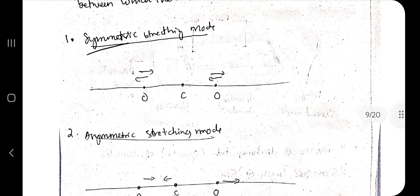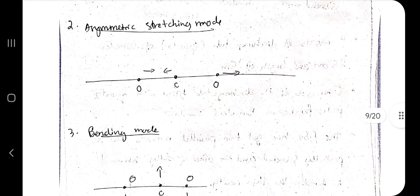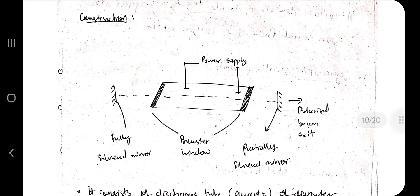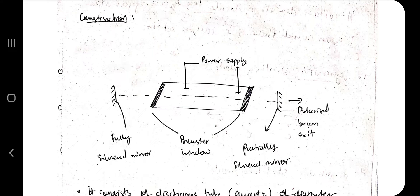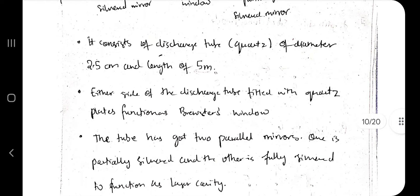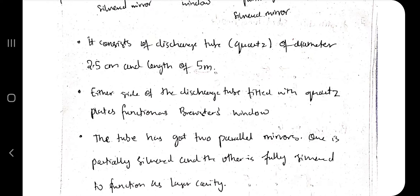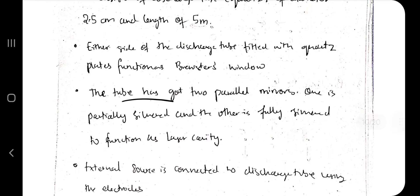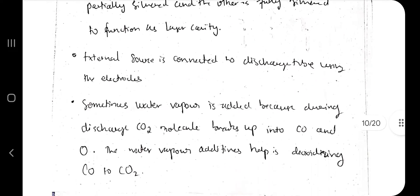For the CO2 laser, there are three modes of vibration: symmetric mode (equal in both directions), asymmetric mode (one direction is larger), and bending mode (up and down). The construction consists of a discharge tube of diameter 2.5 cm and length 5 m, filled with quartz plates functioning as Brewster's windows. The tube has two parallel end elements — one partially silvered and one fully silvered — forming the laser cavity.